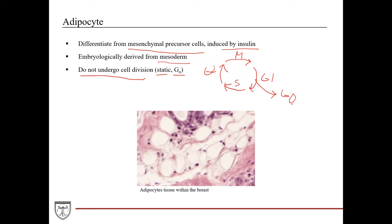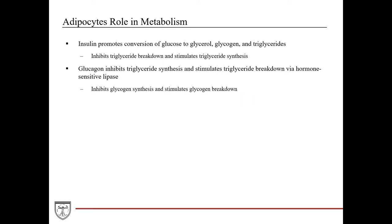This is a great image of adipocytes within breast tissue. You can see they have a roundish shape. In white adipose tissue, you have the peripherally located nucleus and peripherally located cytoplasm essentially surrounding this inclusion body. We'll go into more detail on this in a few slides.